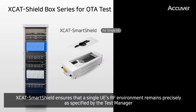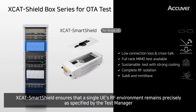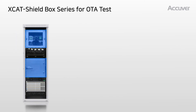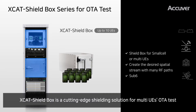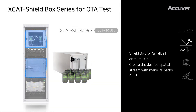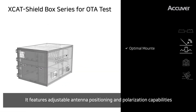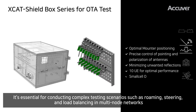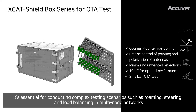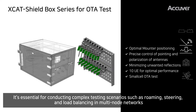X-Cat SmartShield ensures that a single UE's RF environment remains precisely as specified by the test manager. X-Cat ShieldBox is a cutting-edge shielding solution for multi-device OTA testing. It features adjustable antenna positioning and polarization capabilities, and is essential for conducting complex testing scenarios such as roaming, steering, and load balancing in multi-node networks.